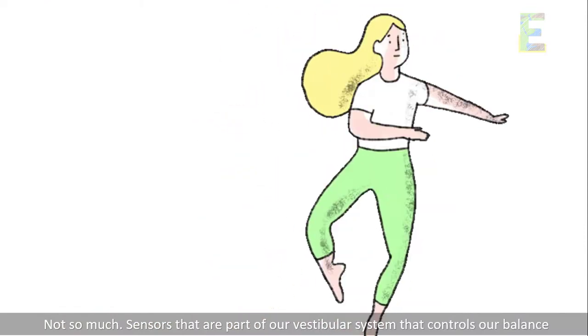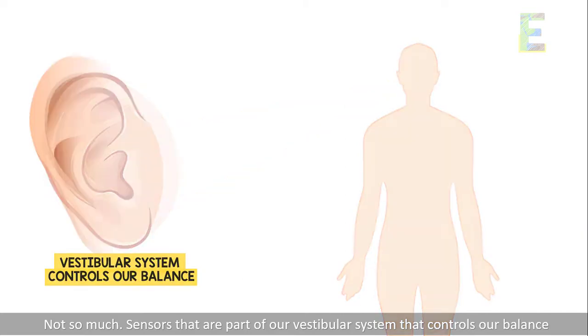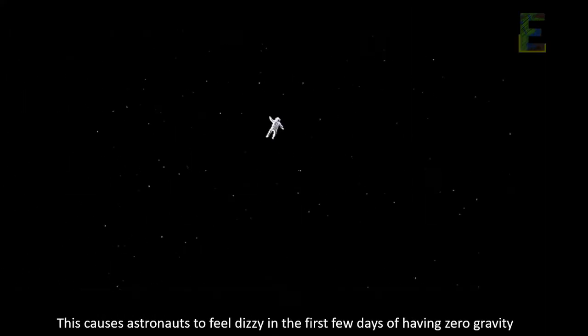Sensors that are part of our vestibular system that controls our balance and is located in our ears are thrown off when in space. This causes astronauts to feel dizzy in the first few days of having zero gravity.